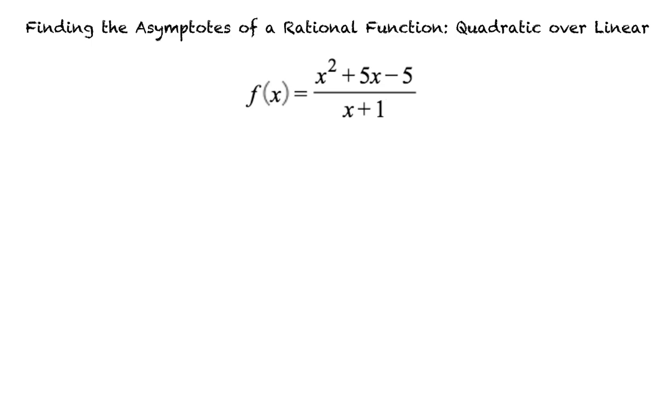We'll start by finding the different asymptotes: vertical, horizontal, and slant. Let's find the vertical asymptotes first.